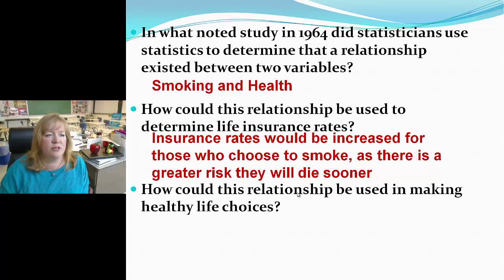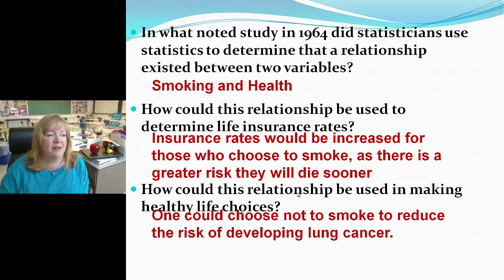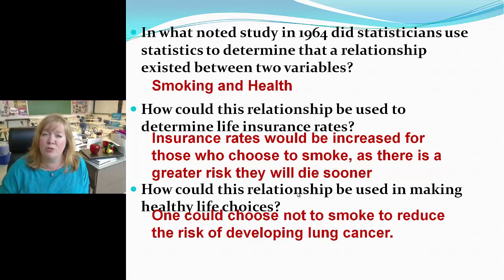How could this relationship be used in making healthy life choices? One could choose not to smoke to reduce the risk of developing lung cancer. One thing to consider is a study on smoking marijuana, as it's supposedly much worse for you than a cigarette because with marijuana there's no filter.